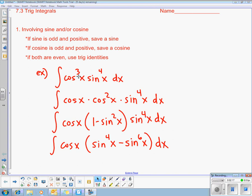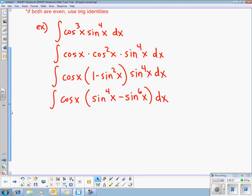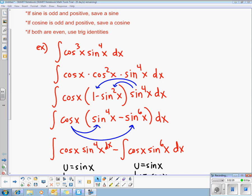Okay, because cosine was odd to start with, I'm left with one loaner and an even amount which I can transform over into cosines.